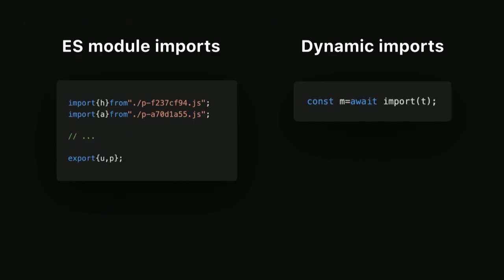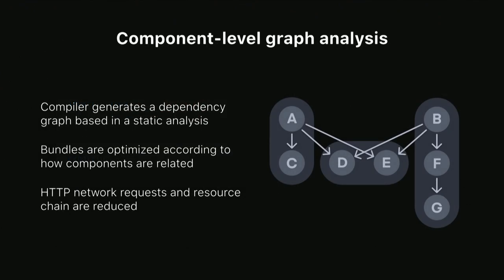ES modules are a standardized module system, and they're already built into modern browsers. This is the extent of the code required to import and export modules — and I'm not showing source code here, this is the actual JavaScript running inside of the browser. Bundling is still very valuable, but it should only be a build time thing. With native support for ES modules, bundlers no longer need to add code into your application for it to work, which is another reason why our component file sizes can stay so small. It offers superior tree-shaking abilities compared to CommonJS, especially with the Rollup bundler, which is what Stencil uses.